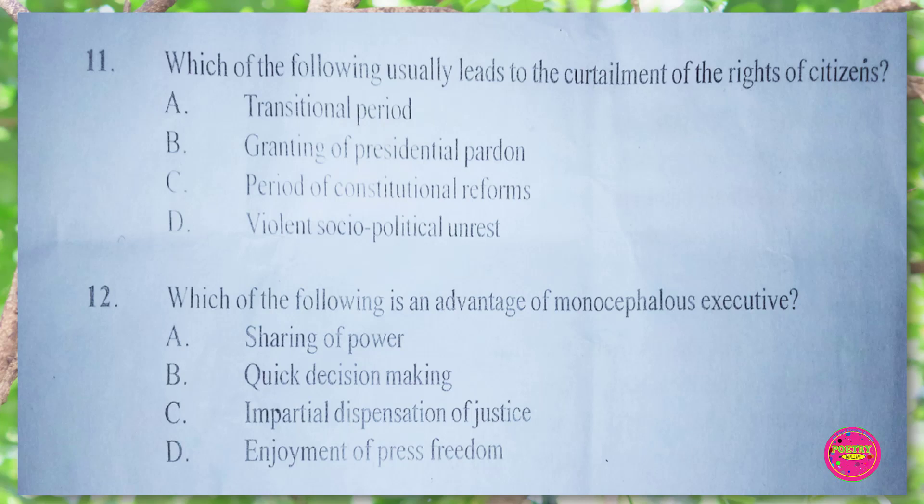Question 12. Which of the following is an example of a monocephalous executive? A. sharing of power, B. quick decision making, C. impartial dispensation of justice, D. enjoyment of press freedom. The correct answer is B. quick decision making.